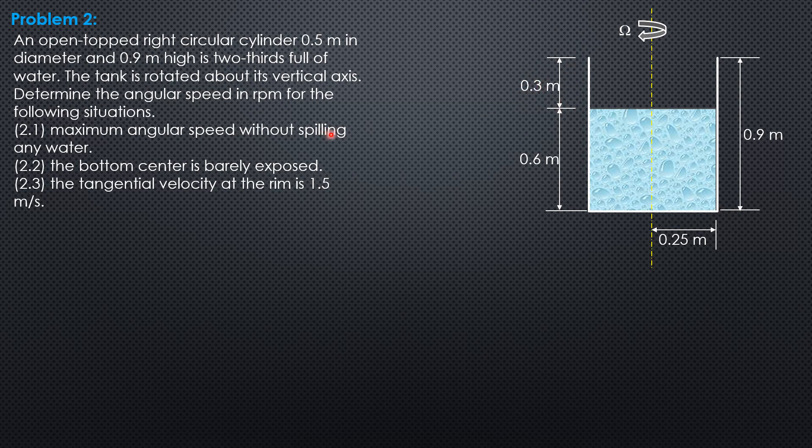So for the first question, maximum angular speed without spilling any water, the imaginary paraboloid of revolution should have a height double that of 0.3, which is 2k. So that's the principle, remember, without spilling any water.